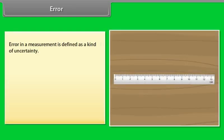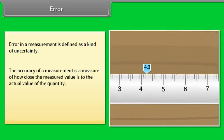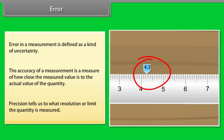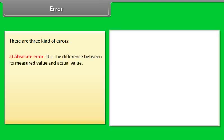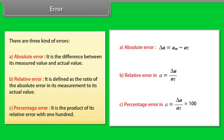Error. The result of every measurement by any measuring instrument contains some uncertainty. Error in a measurement is defined as a kind of uncertainty. The accuracy of a measurement is a measure of how close the measured value is to the actual value of the quantity. Precision tells us to what resolution or limit the quantity is measured. There are three kinds of errors: Number 1, absolute error, it is the difference between its measured value and actual value. Number 2, relative error, it is defined as the ratio of the absolute error in its measurement to its actual value. Number 3, percentage error, it is the product of its relative error with 100.